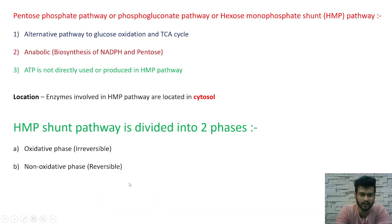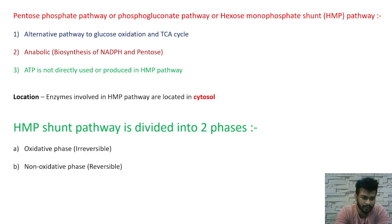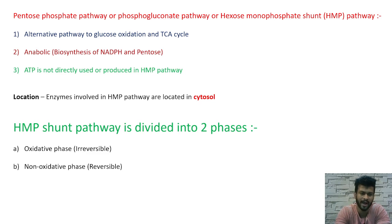The pentose phosphate pathway is also known as the phosphogluconate pathway, the hexose monophosphate shunt pathway, or HMP pathway. It is also referred to as an alternative pathway to glucose oxidation and the TCA cycle.